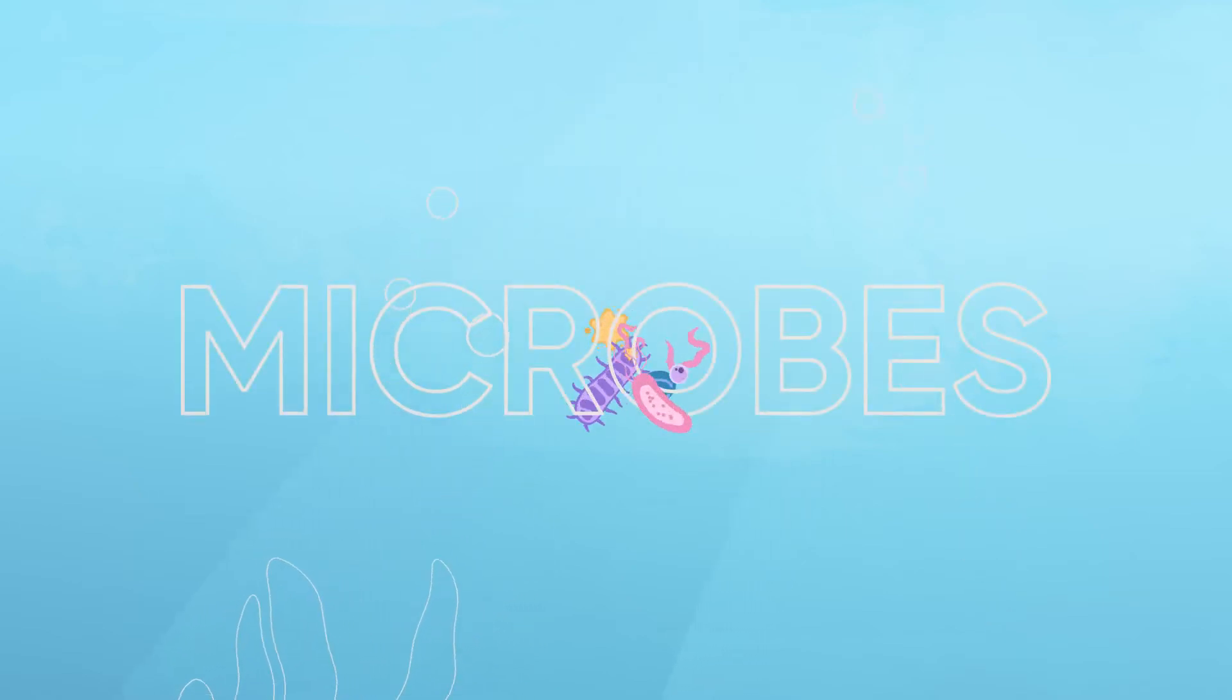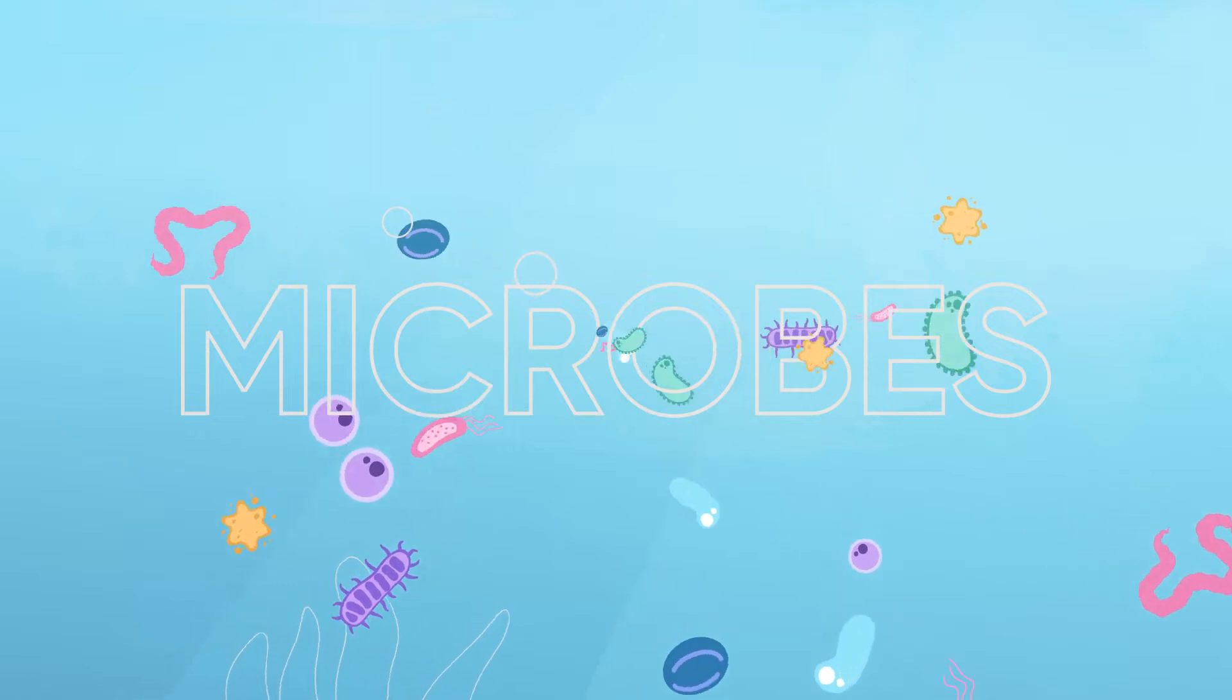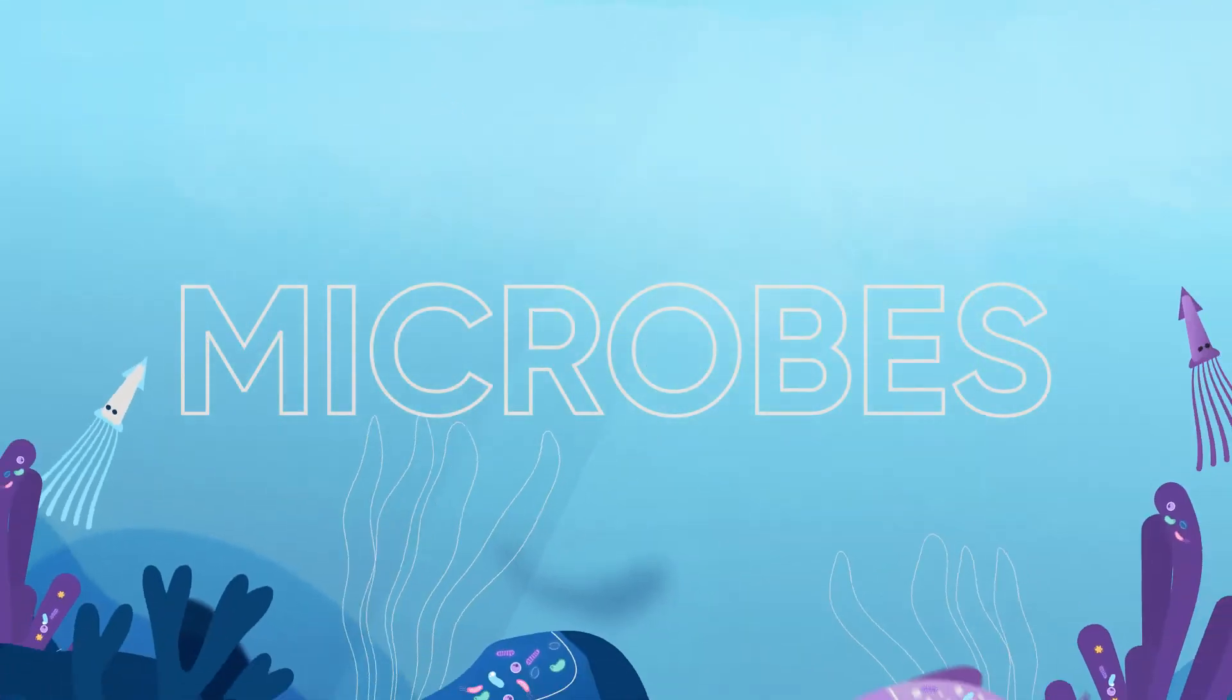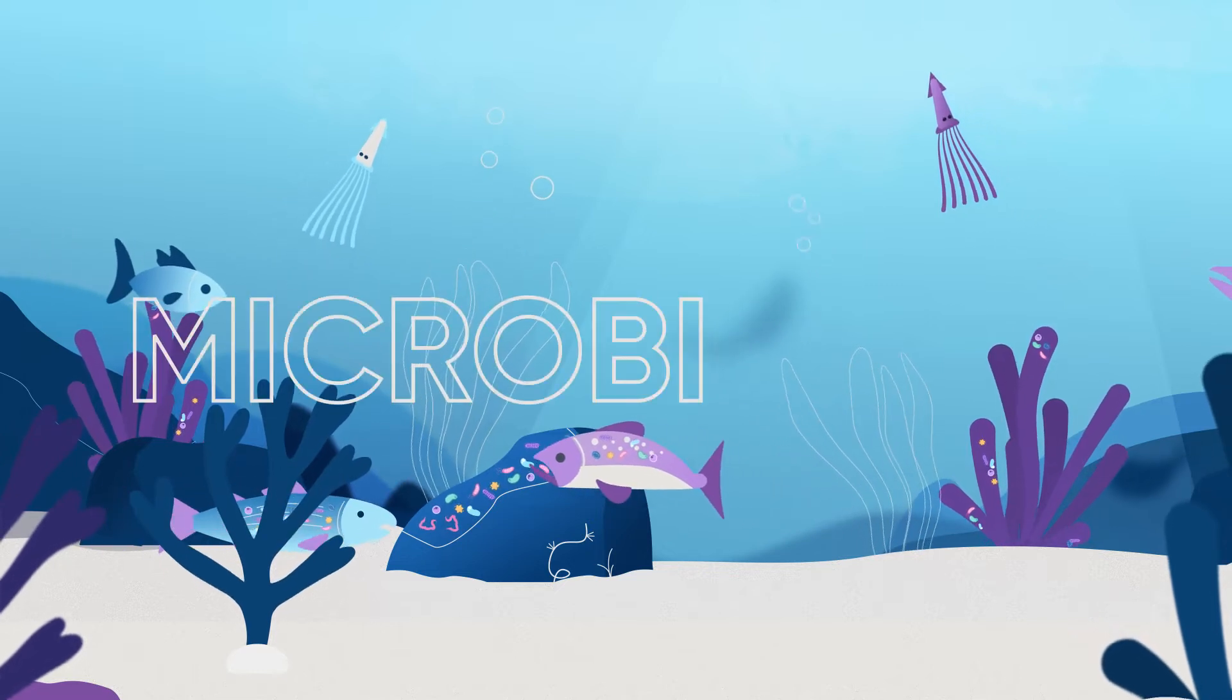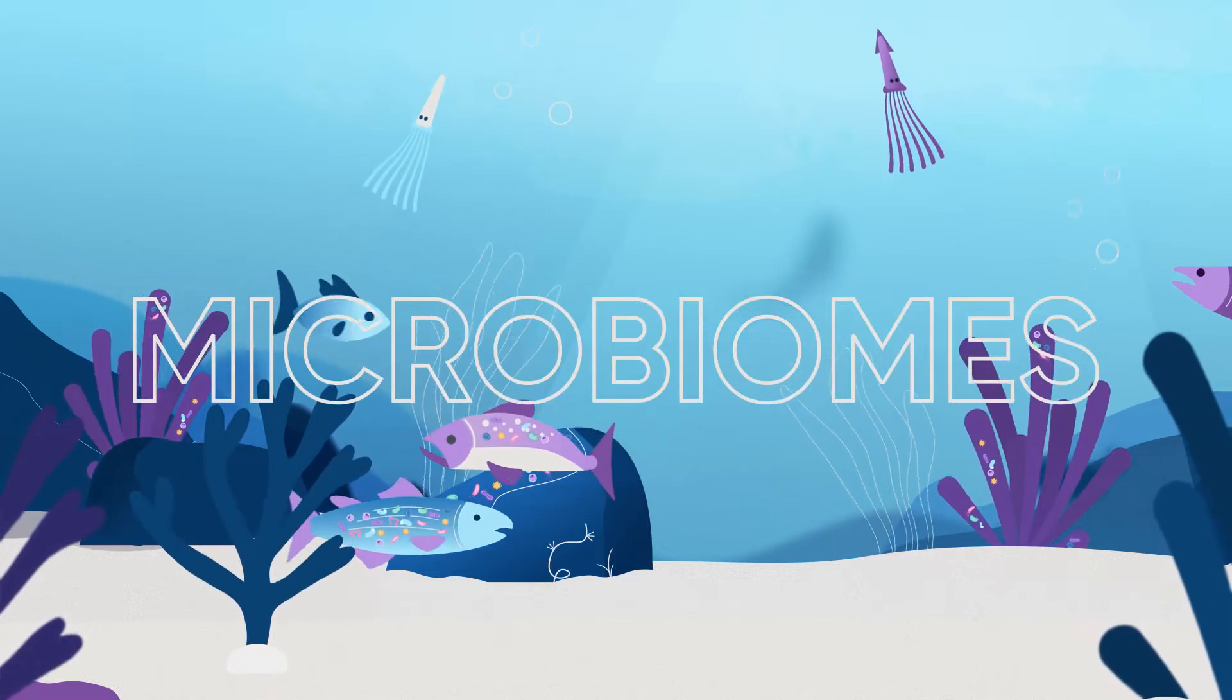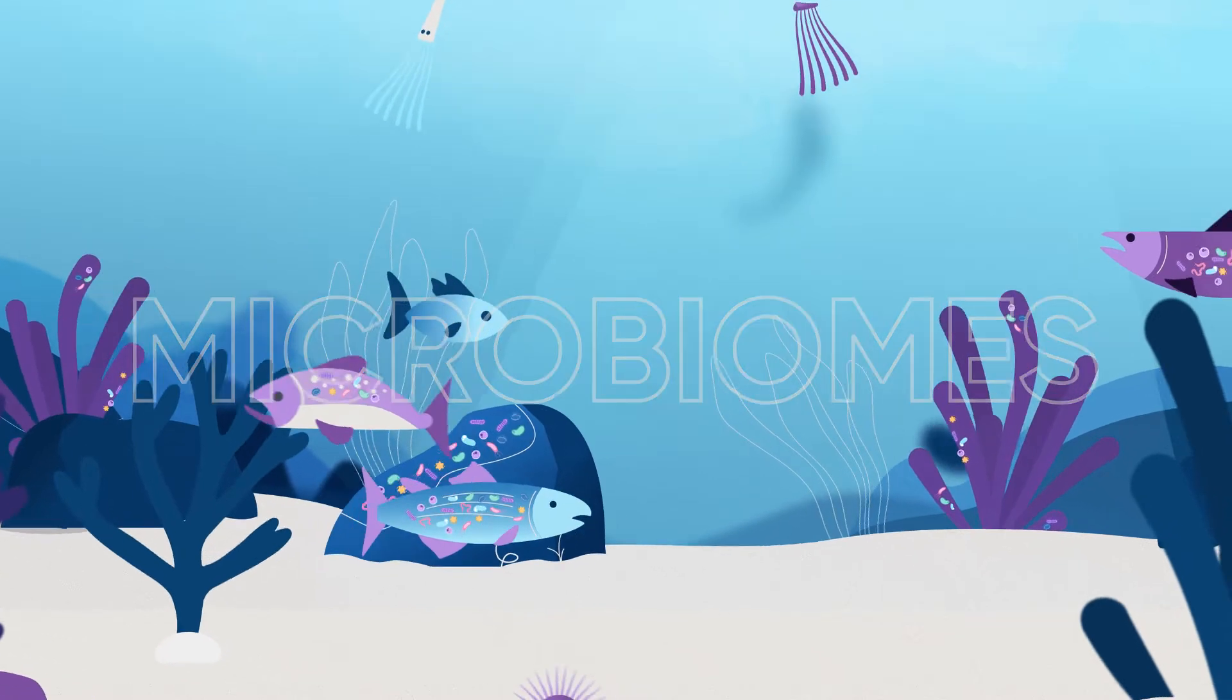Marine microbes such as bacteria, fungi and microalgae form complex communities that live alongside marine hosts. These interacting communities or microbiomes are found in most marine life, including sponges, algae and fish.